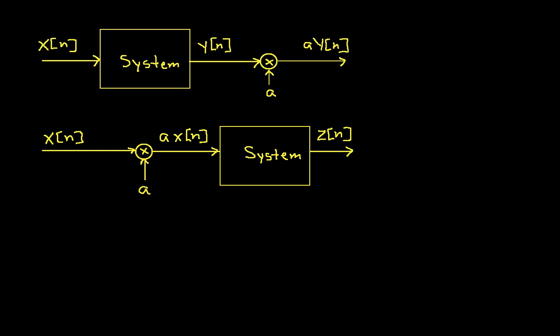A system that is linear actually has to satisfy two different properties. The first is homogeneity, and this shows how you test whether or not a system satisfies homogeneity. The idea is you take a signal, you put it into the system and get whatever the output is, and then you multiply that output by some constant, which I've called a.